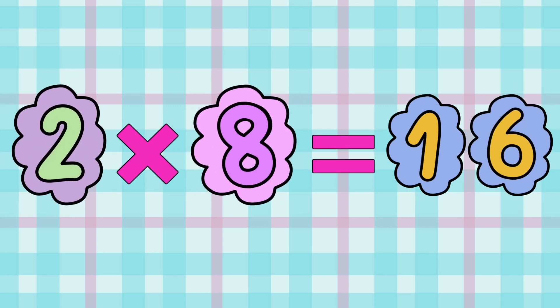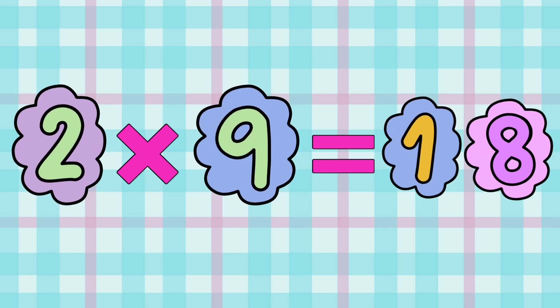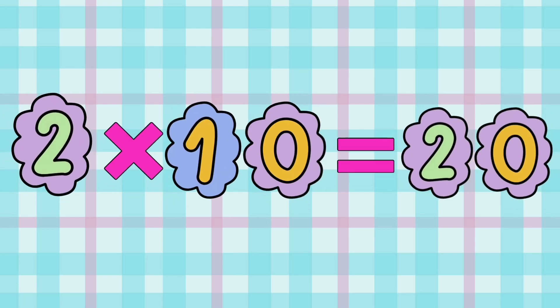2 x 8 is equal to 16. 2 x 9 is equal to 18. 2 x 10 is equal to 20.